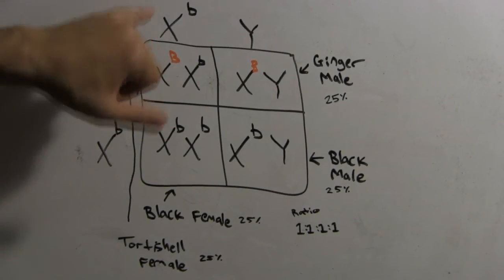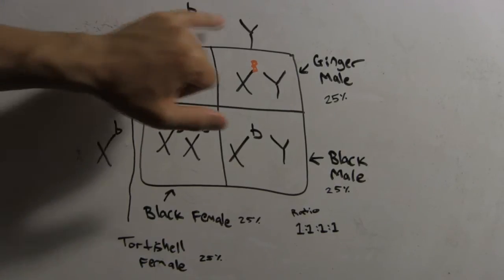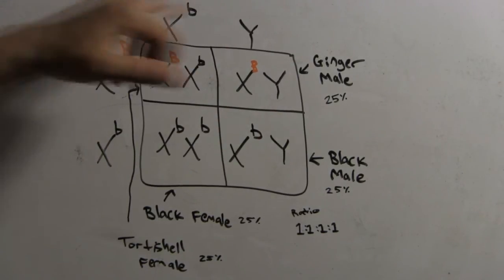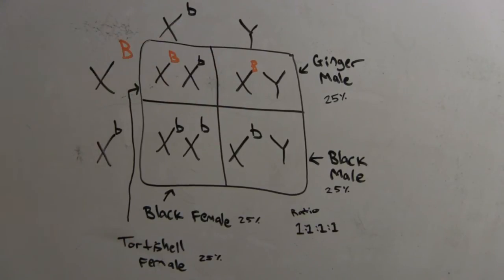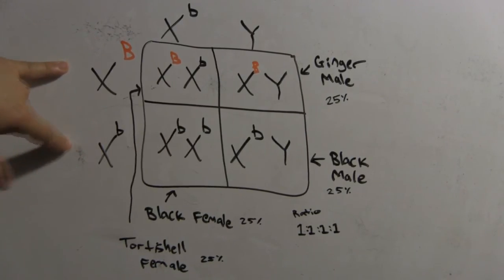Here, what you have is your F2 generation. So you have, what color is this? And what is this, a male or female? X lowercase b Y. It's a male. X lowercase b is black, so it's a black male. And here, you have X uppercase B, X lowercase b. This is a female. B here, b there. It's a tortoiseshell female. Because remember, these are co-dominant. These alleles, uppercase B and lowercase b are co-dominant.